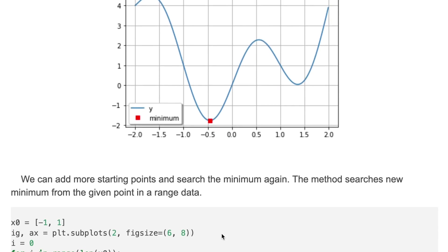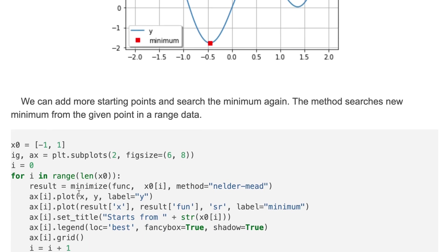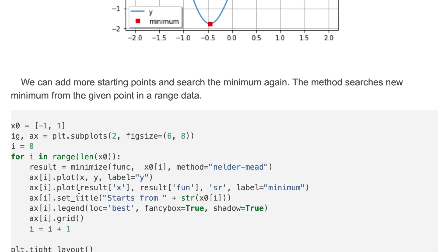We can add more starting points and search the minimum again. The method searches for new minimum from a given point in a range. Here we start from minus one and the second one is one and we visualize it in plots.